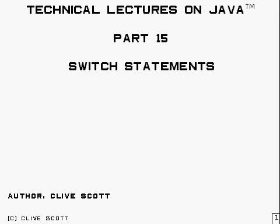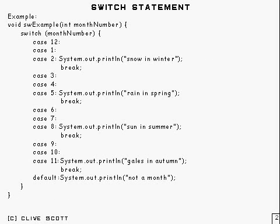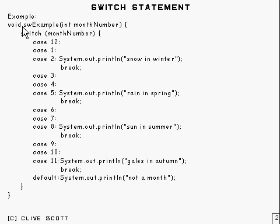This is part 15, and it covers switch statements. The best approach is to give an example of a switch statement, and that's what I've done here. What happens is there's an integer passed into this method — a month number — and based on that month number, it jumps to one of these things down here, which are called switch labels.